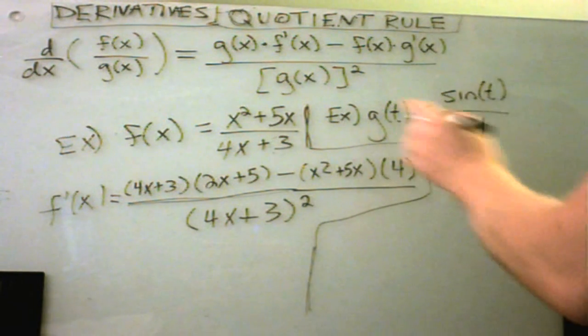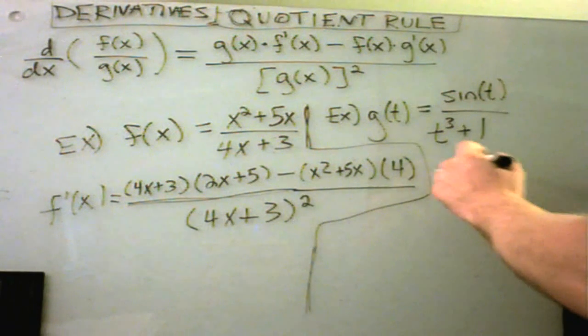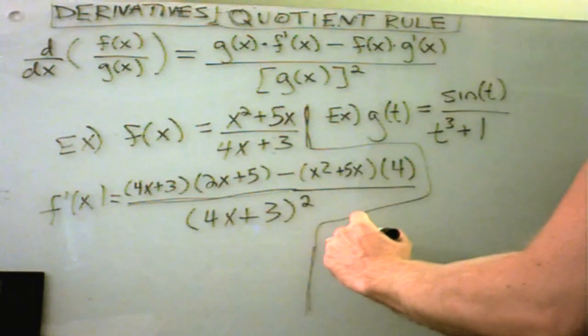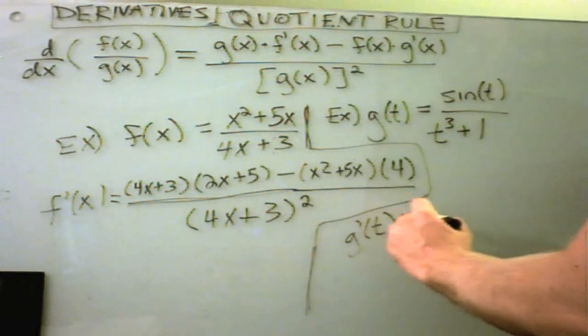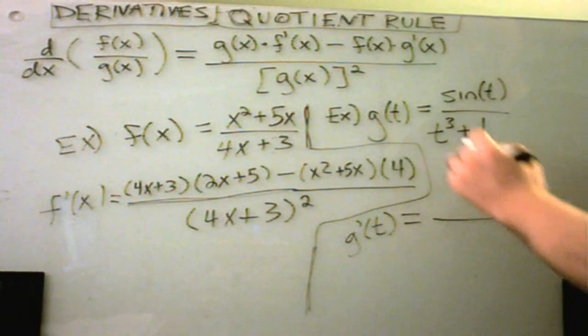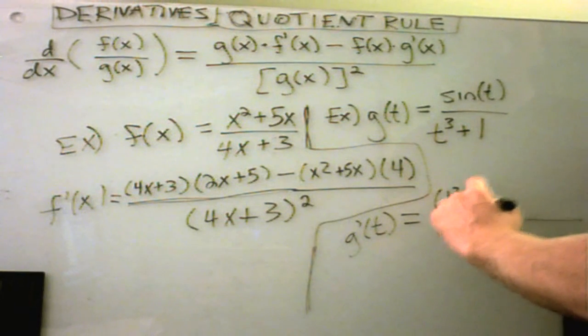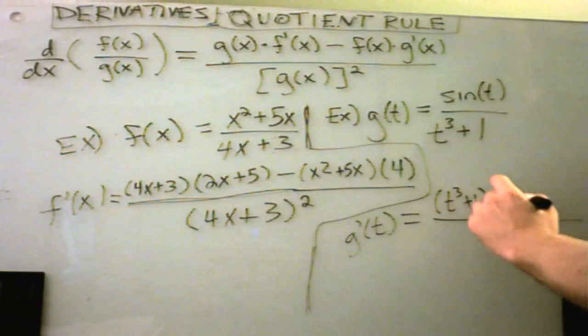So, our other example here, g of t equals sine of t over t cubed plus 1. Well, just like the other one here, we'll take the derivative. So, g prime of t. It says we take the bottom, leave that alone. So, t cubed plus 1. Multiply that by the derivative of the numerator, which is going to be cosine of t.